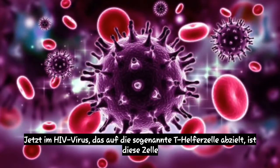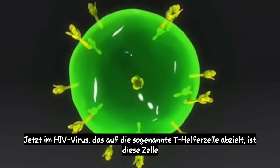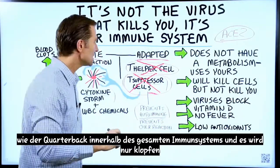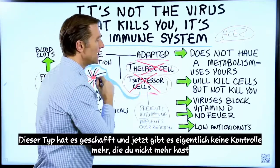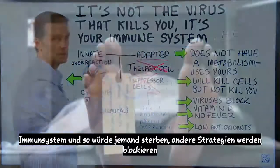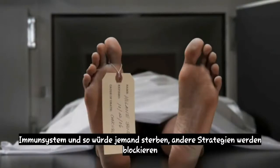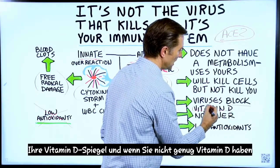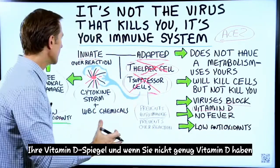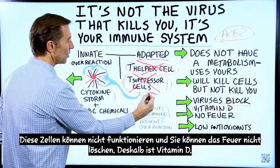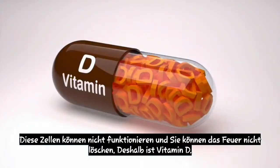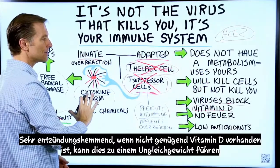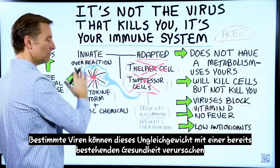It's usually certain metabolic conditions causing weakness within these specific cells. In the HIV virus, it targets what's called the T-helper cell — like the quarterback of the entire immune system — and knocks it right out. Now there's no control and no immune system, and that's how someone would die. Other strategies will block your vitamin D levels, and if you don't have enough vitamin D, these cells can't work and you can't put out the fire. This is why vitamin D is very anti-inflammatory. Not having enough vitamin D can create this imbalance.